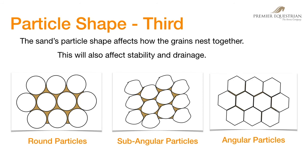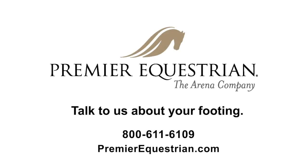Particle shape is very important — ranked third because if the gradation is good, we can override some angular particle issues with synthetic additives. Round particles create voids; they offer cushioning and enhanced drainage, but are typically very unstable since they tend to roll around. Round particles are created by rolling and tumbling in water, such as in rivers and oceans. Sub-angular particles have their sharp edges worn off; they will nest while still allowing for some movement — this is an erosional sand from wind and rain. Angular particles have sharp edges and fit together tightly, causing compaction and hardness. Most angular particles are man-made from crushing rocks. Particle shape plays an important role in the final surface.